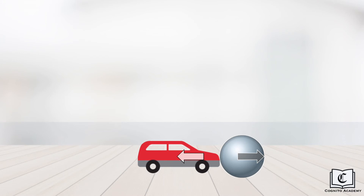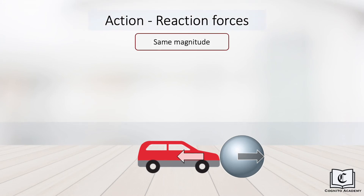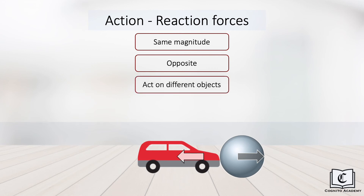Action-reaction pairs have the following characteristics. Both forces are equal in magnitude and opposite in direction. An important thing to note is that action-reaction pairs must act on different objects, and as such, they do not cancel each other out. Notice the grey arrow is acting on the ball, while the white arrow is acting on the car. Lastly, they are both the same type of forces — both being contact forces.